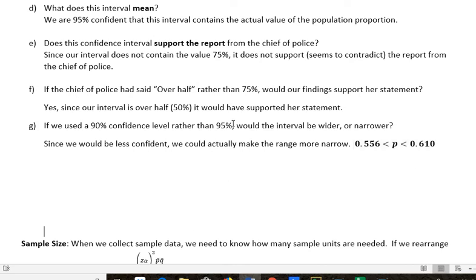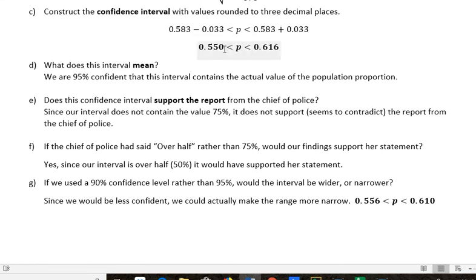You can see that if I use 90%, instead of 0.550, I'd be at 0.556—a little bit higher or closer to p̂ on this side. And instead of 0.616, I'm at 0.610, a little closer in on this side as well. So not a lot different, but a little narrower because we're not trying to be as confident.